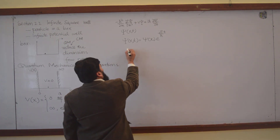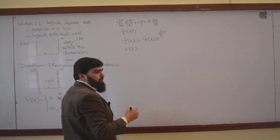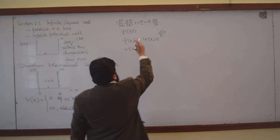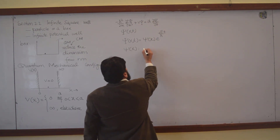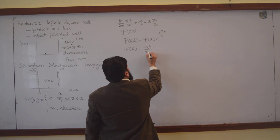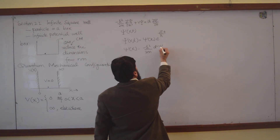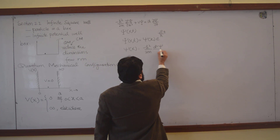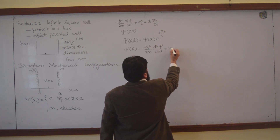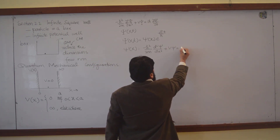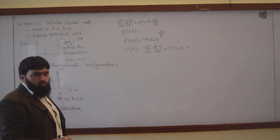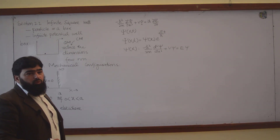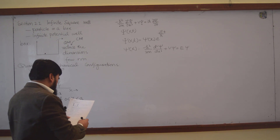For psi(x), we solve the time-independent Schrödinger equation: minus h-bar squared over 2m times d²psi/dx² plus V times psi equals E times psi. This is the equation that gives us the stationary states.